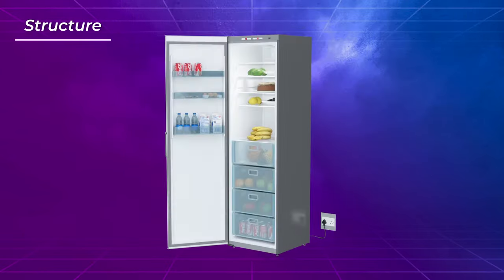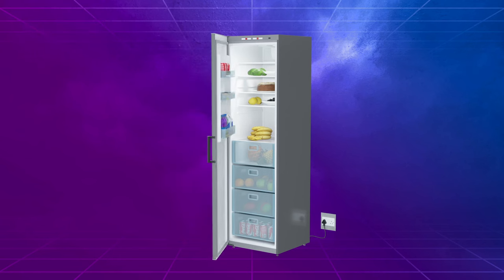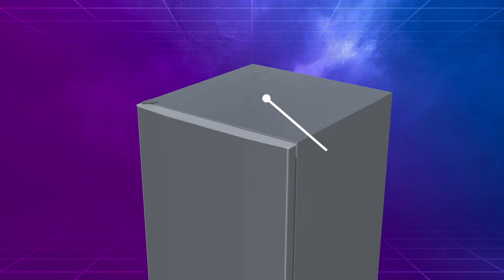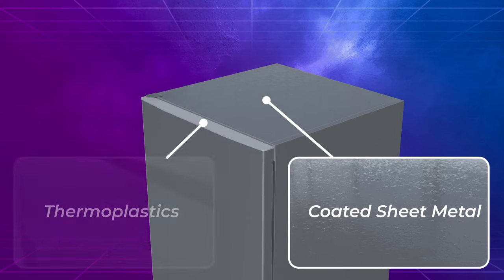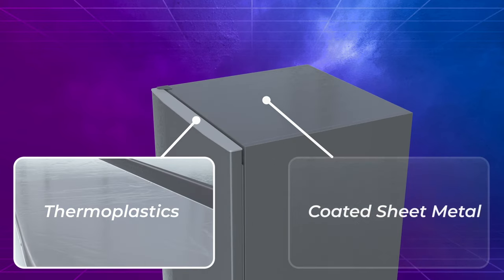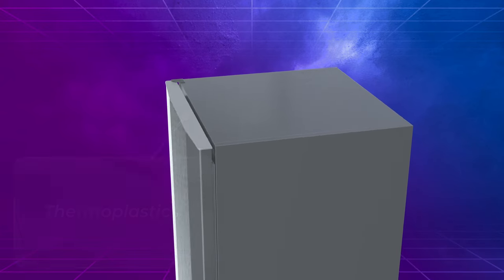Let's start with the structure of the fridge. The outer cabinet and door are made from coated sheet metal and thermoplastic materials that protect the fridge from the elements.